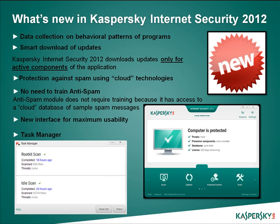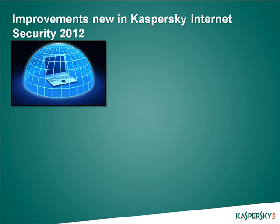Further improvements of Kaspersky Internet Security 2012 include removal of incompatible software during installation. For Kaspersky Internet Security 2012 to work correctly, there should be no third-party antivirus products or firewalls on the computer. To avoid conflicts with similar software, during installation, Kaspersky Internet Security 2012 searches for products that are incompatible with it and prompts the user to remove them.